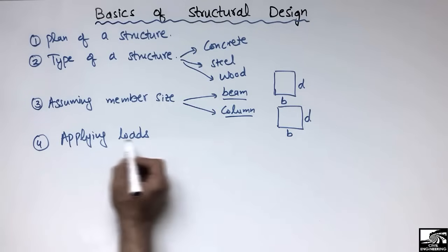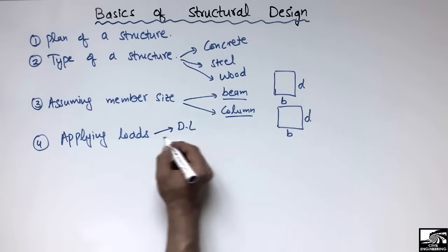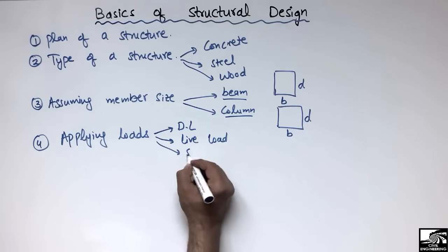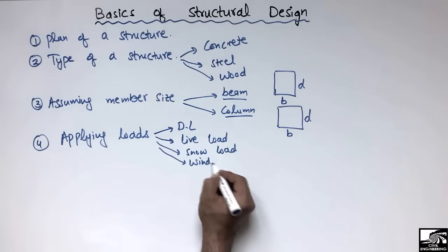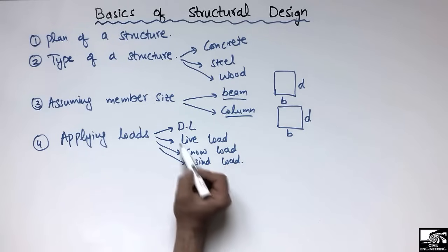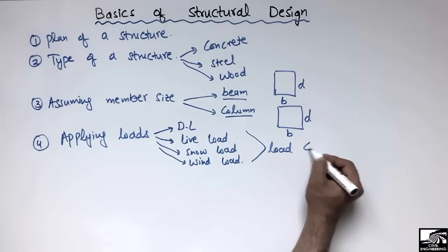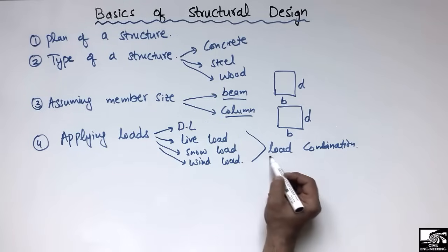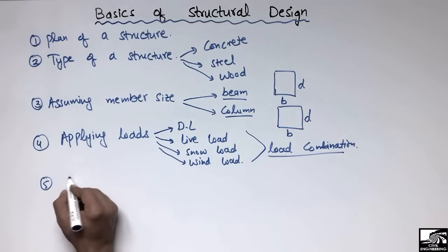The fourth step is applying loads on the structure. This means you have to take the dead load of the structure, the live load, the snow load if it is in a snow region, and the wind load if it is a taller structure. Depending on where your structure is located, you take various kinds of loads and apply the worst load combination for your structure.